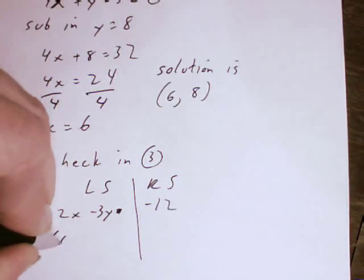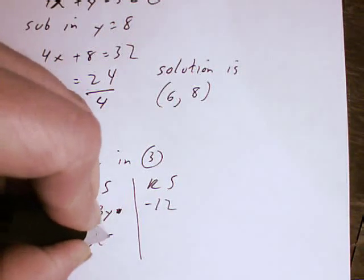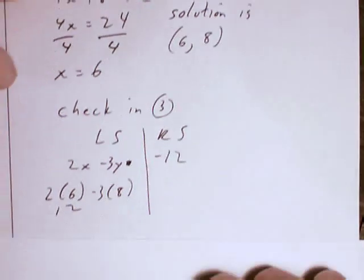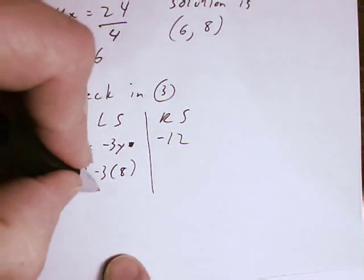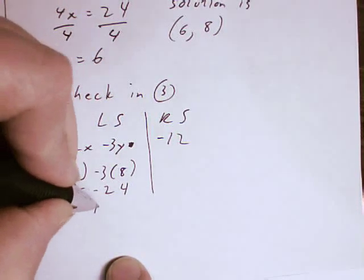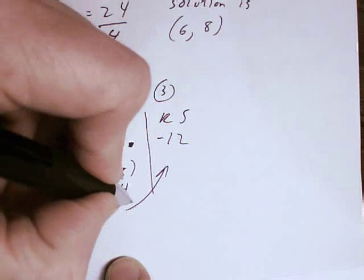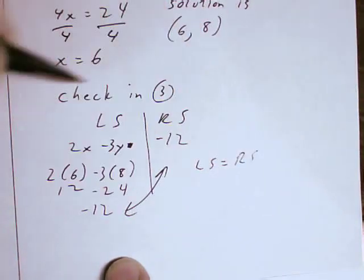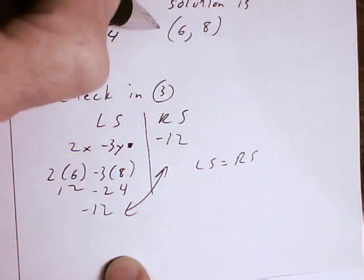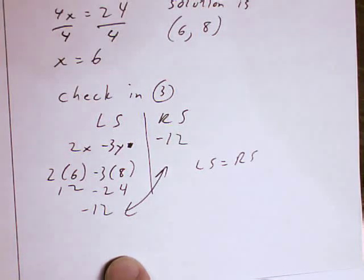So 2 times 6 minus 3 times 8. 2 times 6 is 12. Negative 3 times 8 is minus 24. And 12 minus 24 is negative 12. Negative 12 equals negative 12. Left side equals right side. This is the correct solution to this system. Thank you for visiting this lesson.